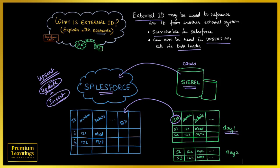But the question is: how will the system identify whether the record exists or not? There can be two scenarios—either through an ID or through an External ID.